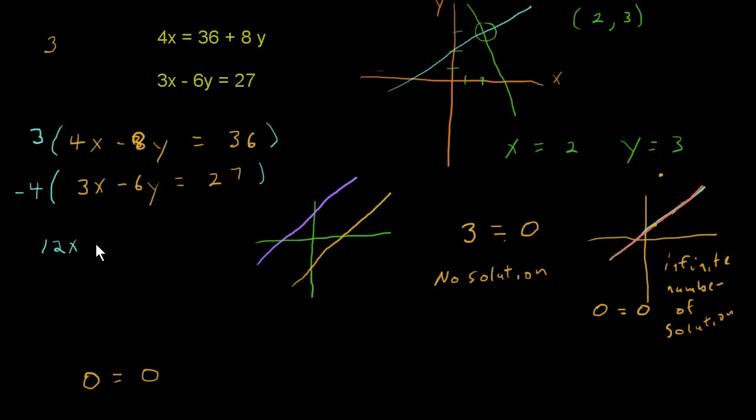3 times 4x is 12x. 3 times negative 8y is negative 24y. And let's see, 3 times 36. 3 times 6 is 18, carry the 1, 9, 108. Okay, for the second equation, we're going to multiply everything by negative 4. We get negative 4 times 3 is negative 12x. Negative 4 times negative 6 is positive 24y. And negative 4 times positive 27, yes, we get negative 108.